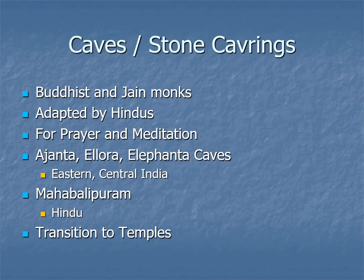Now that we've covered Hindu gods and how they're represented, let's look at how they are first represented in a temple structure. The oldest are cave or stone carvings — religious spaces carved right into the stone. This starts with Buddhist and Jain monks, but later is adapted by Hindus. These monks wanted to escape the world and would go to isolated spots — mountain ranges, cliffs — and carve out a room for prayer and meditation. The most famous are the Ajanta, Ellora, and Elephanta caves, mostly in eastern and central India. In the south, there is Mahabalipuram, which is Hindu. These are the oldest religious spaces.